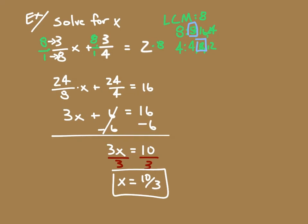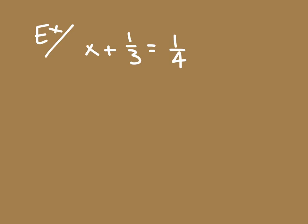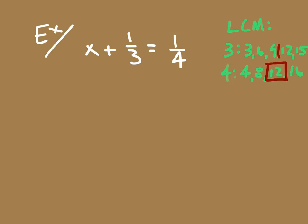It's okay if we get a fraction because fractions are numbers too. Even though you go through all this work and get a number like that, that's okay. Now on something like this: x plus one-third is equal to one-fourth. I want to eliminate my fractions, so I find my least common multiple. Multiples of three: 3, 6, 9, 12, 15. Multiples of four: 4, 8, 12, 16. My least common multiple is 12.